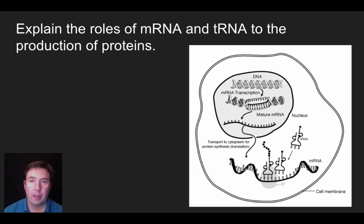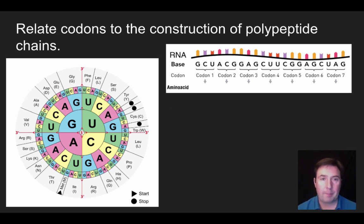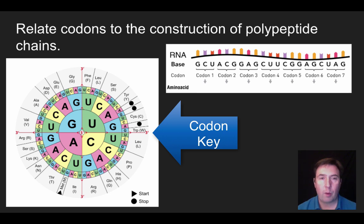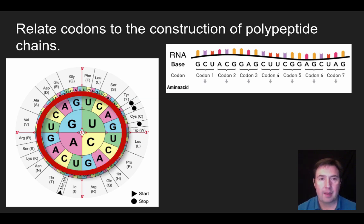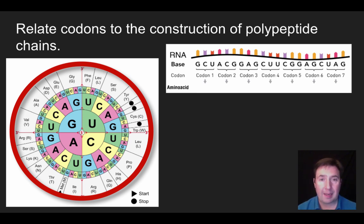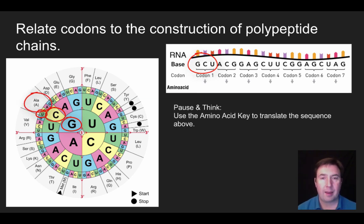Now let's talk about how translation works using a codon key. On the left is a universal codon key — reading from the inside out, if you find a series of bases, reading the first base from the middle circle, then the second and third bases, you can translate the mRNA into an amino acid. For example, if the first RNA bases are GCU, looking at the codon key with G, then C, then U, that leads to alanine. Now pause and use the amino acid key to translate the remainder of this codon sequence — I've given you the first, find the next six.